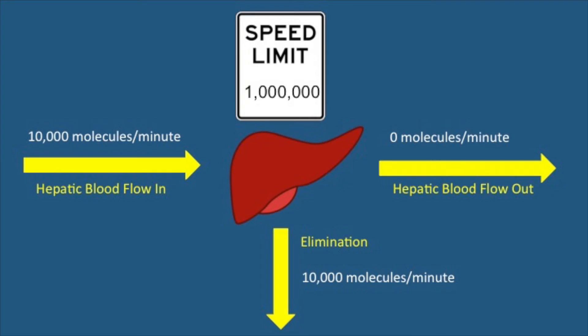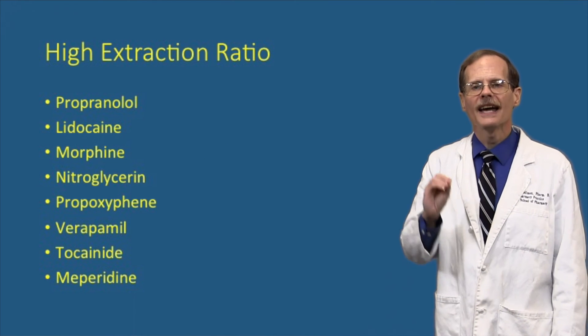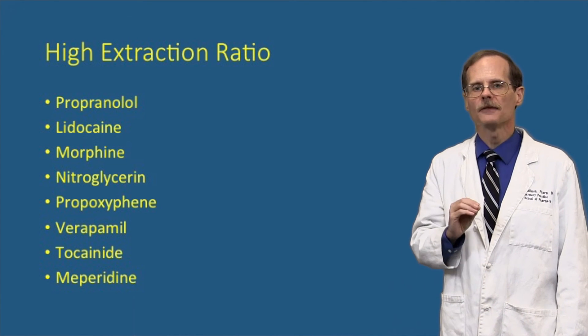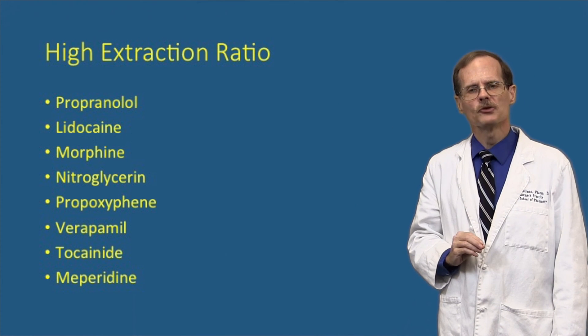However, if the extraction ratio of the drug is high and the liver has a high intrinsic clearance for that drug, the liver can get rid of whatever it gets its hands on. If the liver can remove 1 million molecules per minute, it will have no trouble if the blood delivers 10,000 molecules per minute. If we double blood flow and give the liver 20,000 molecules per minute, it can still clear them all. If we halve the blood flow and only send 5,000 molecules per minute, that's all the liver is going to be able to clear. With high extraction ratio drugs, changes in hepatic blood flow make big differences in how quickly the drug is removed.